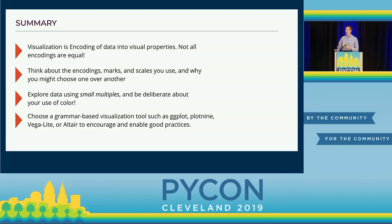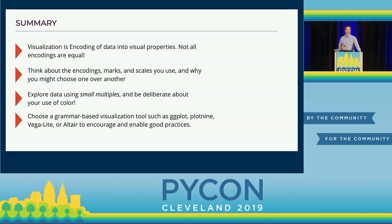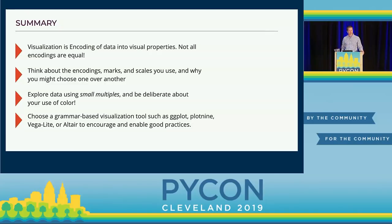Explore small multiples — do lots of little visualizations of your data set because it can give intuition into what's going on. Choose a grammar-based approach to data exploration. If you're into R, try ggplot2 — it's an incredible tool. If you're in Python, try plotnine or try Altair. If you like JavaScript, using Vega and Vega-Lite directly is a good option, particularly in Observable notebooks. Explore those tools and see how effective you can be at the visualizations you're doing. Thanks very much.